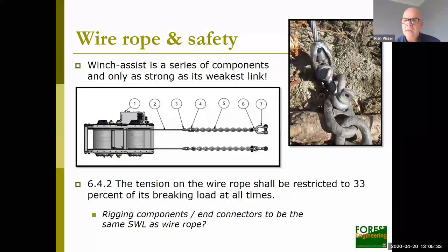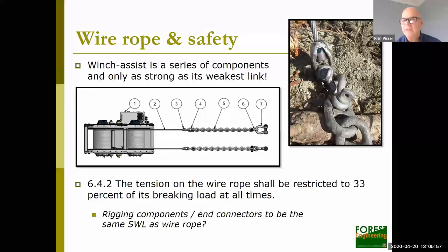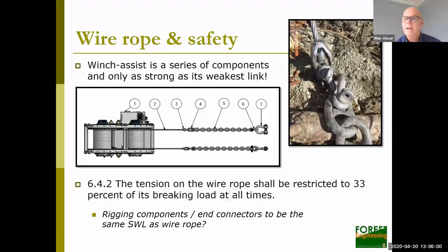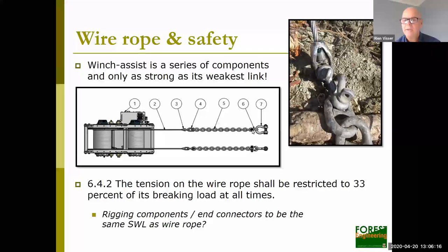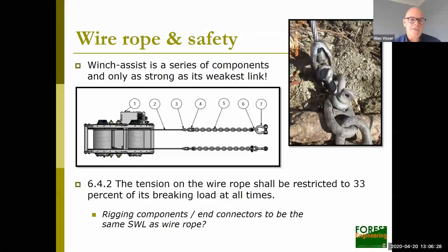There are a lot of different components to consider. The winch assist unit is bolted onto the back of the dozer or excavator. Then we have the wire rope (component two), an end connector (how the wire rope attaches to the machine or chain), a split wedge ferrule in a swivel D, a shackle, and then the chain connecting via another shackle onto the hitch. The system is only as strong as its weakest link.